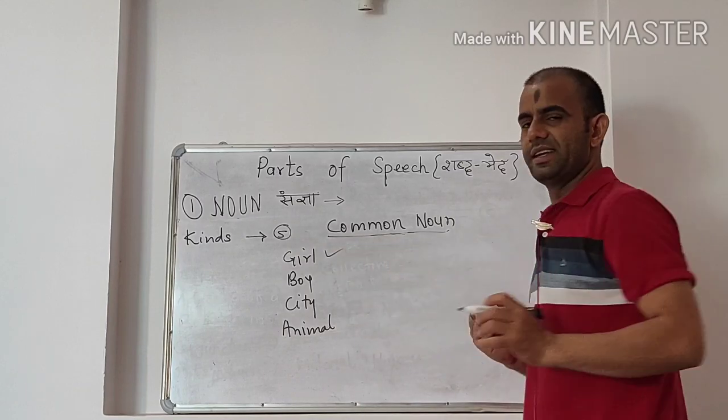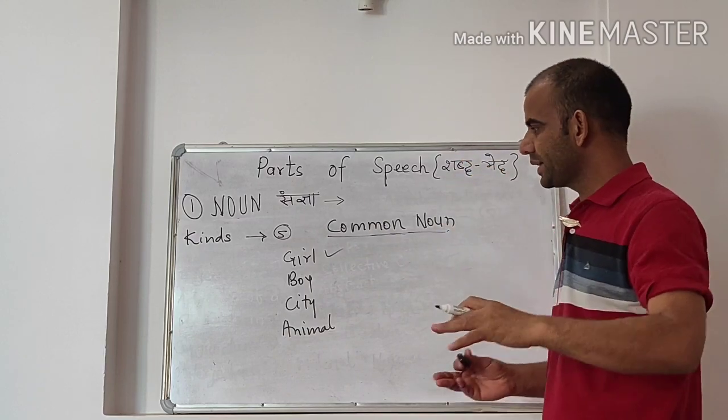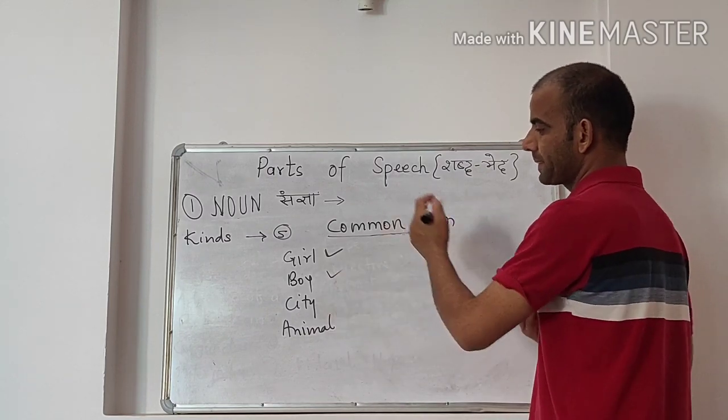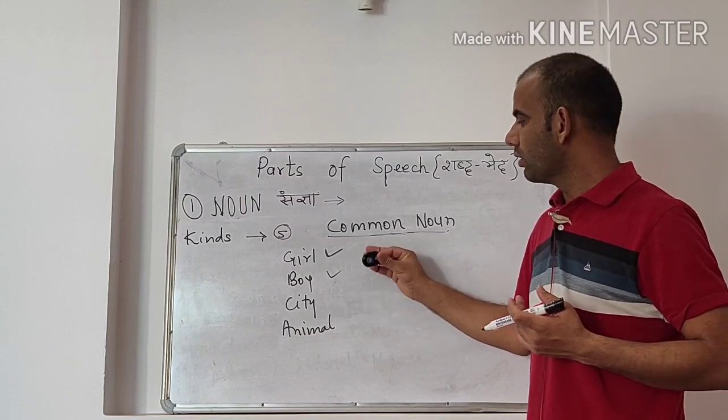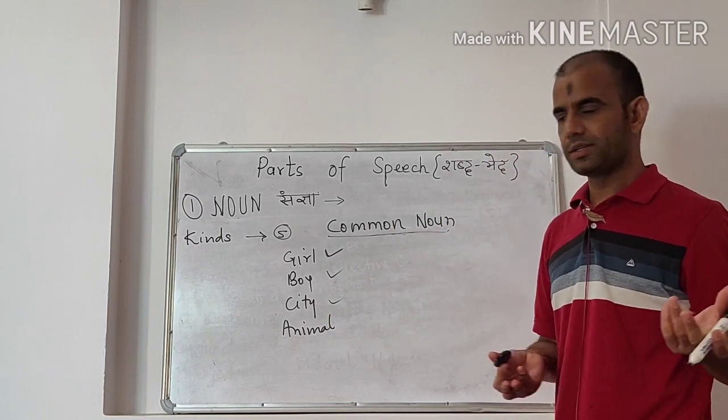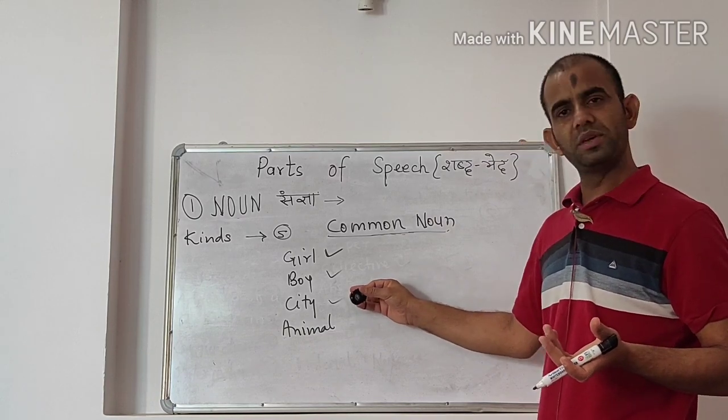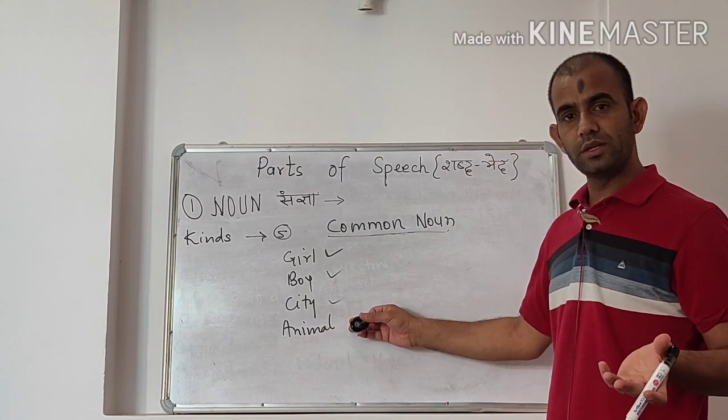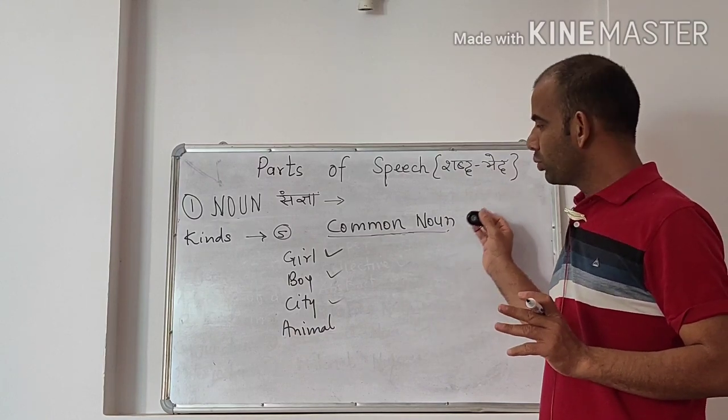There are a lot of cities in this world. Girl is a name given to a person for its gender. It is a common noun. We don't know which girl. Boy, this is also a common name given to a person. We don't know which boy or what is the name of this boy. City, there are a lot of cities in this world. We don't know what city we are talking about. Animal, there are a lot of animals in this world. We are talking about animals not any particular animal. So what is it? Common noun.